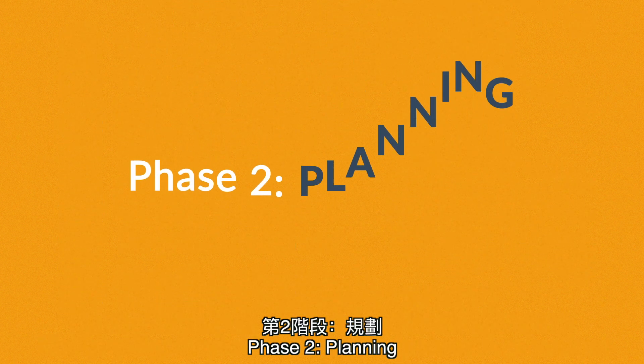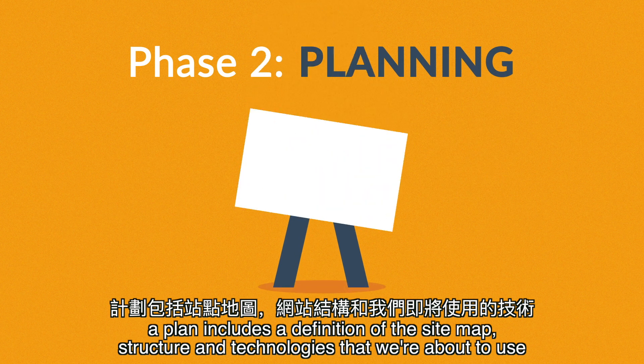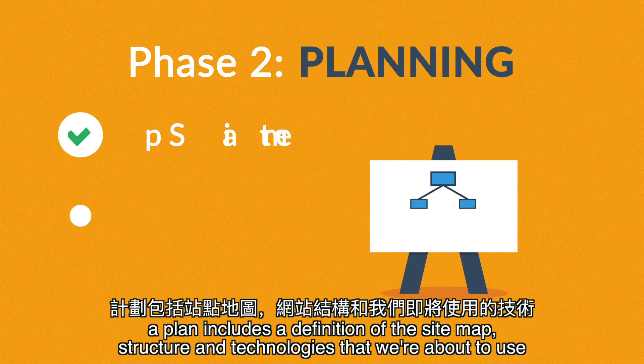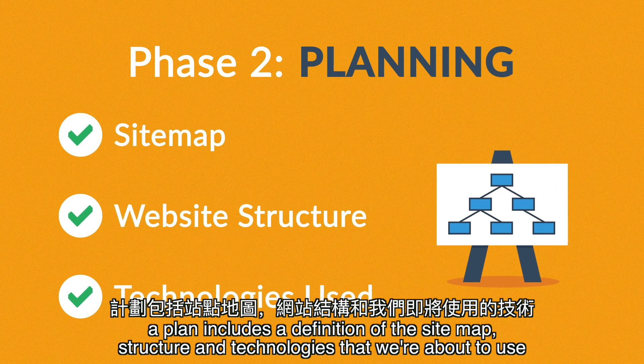Phase 2: Planning. A plan includes a definition of the sitemap, structure, and technologies that we're about to use.